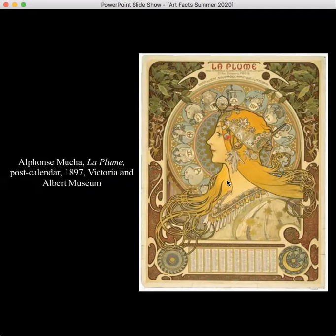So in this Art Nouveau piece, you can see her hair has all of these contour lines, but they're very curving and sinuous. Therefore, we would call those more organic shapes, as opposed to the inorganic or geometric shapes that we just saw in the Mondrian.